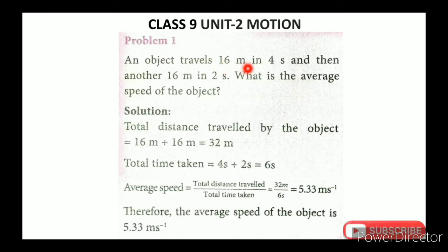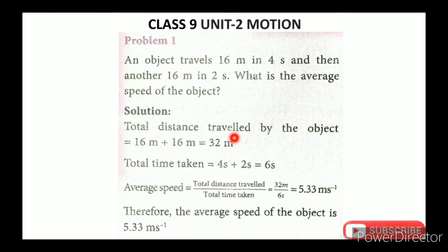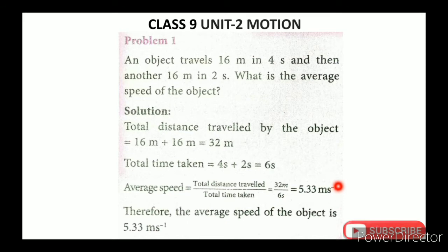An object travels 16 meters in 4 seconds, and then another 16 meters in 2 seconds. What is the average speed of the object? Total distance traveled equals 16 m + 16 m = 32 meters. Total time taken equals 4 s + 2 s = 6 seconds. Average speed equals total distance divided by total time equals 32 divided by 6. The unit is meters per second, that is m·s⁻¹.